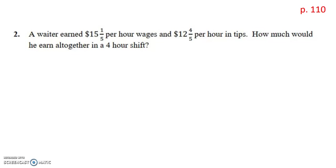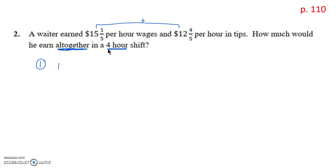Number two: a waiter earned $15 and one-fifth per hour in wages and $12 and four-fifths per hour in tips. How much would he earn altogether in a four-hour shift? This is a two-part problem. First, we combine the two amounts by adding them: 15 and one-fifth plus 12 and four-fifths, to find how much the waiter earns in one hour.